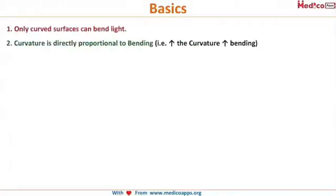Only curved surfaces can bend light. If light rays are coming in one direction, a curved surface can bend them accordingly. Curvature is directly proportional to the amount of bending a surface can offer. These are basic physics concepts.